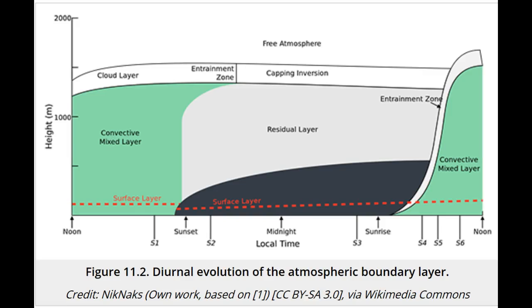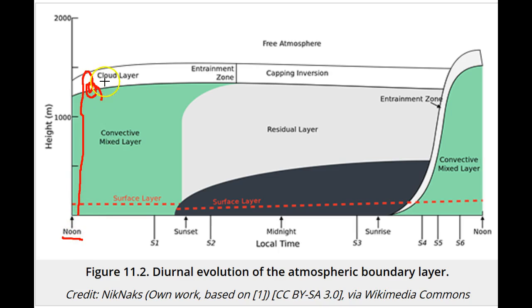Let's look at the variation of the planetary boundary layer over the course of a typical day. We'll start midday, when the sun is out and solar heating of the surface is causing buoyant air parcels to rise until the virtual potential temperature matches that of the overlying air. These air parcels have momentum and they overshoot the level of neutral buoyancy. In the process, they entrain air from the free troposphere. Clouds form in this layer. The rising air parcels collide with the air above them and rub against the air around them, producing a whole range of different eddy sizes in mixing.